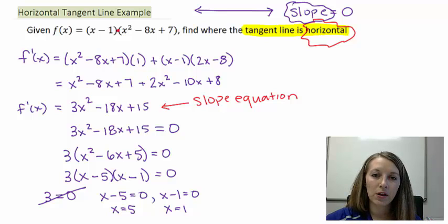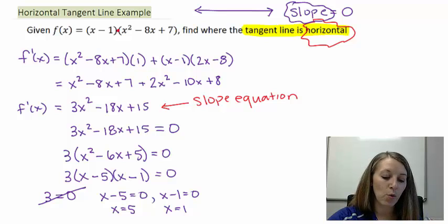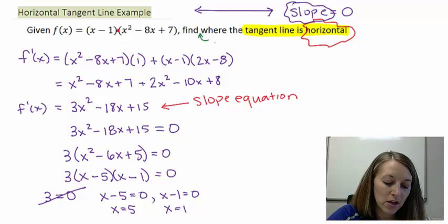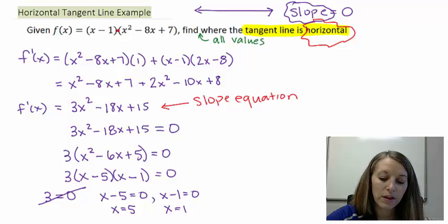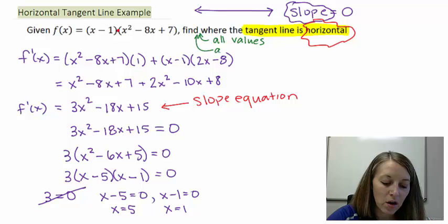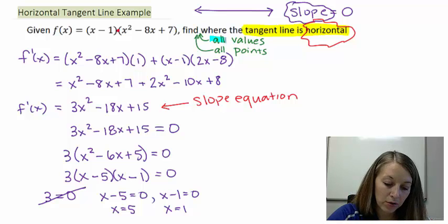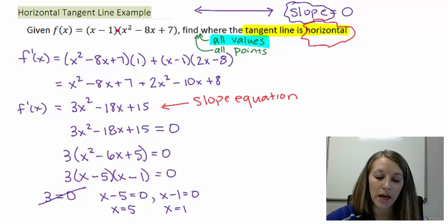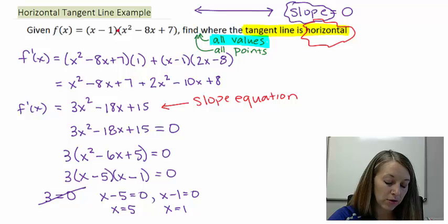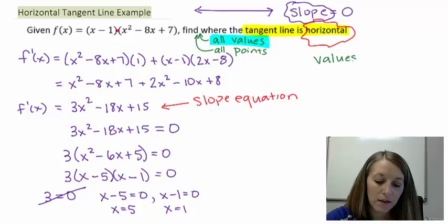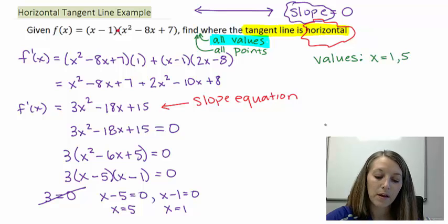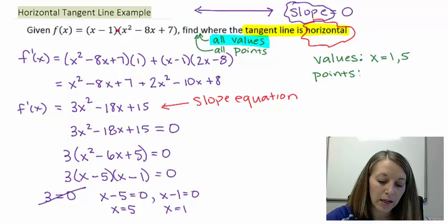We need to be pretty particular about how this problem worded specifically what it was looking for. And this is actually a really bad wording here because it doesn't specify. Usually, our problem should ask for one of two things. It should ask for either find all values where the tangent line is horizontal, or it should ask for find all points where the tangent line is horizontal. If it just asks for all values, that means it just wants the x values where this tangent line is horizontal at. So if it wants the values, then we've done all the work that we need to. We came up with two solutions in this problem where x equals 1 and x equals 5.